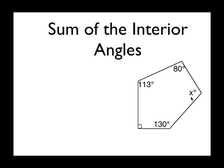In order to find the missing angle, we will be using the interior angle sum. The formula for the sum of the interior angles of any polygon is n minus 2 times 180. Remember, n is the number of sides that the polygon has.